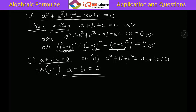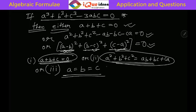So this means that if a cube plus b cube plus c cube minus 3abc is zero, then these three conditions are applicable, and vice versa.